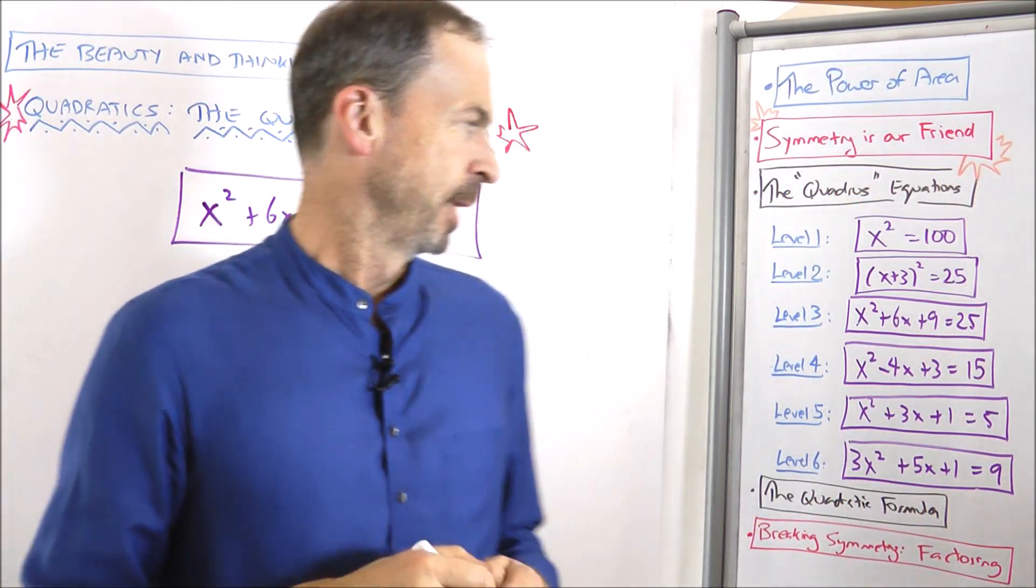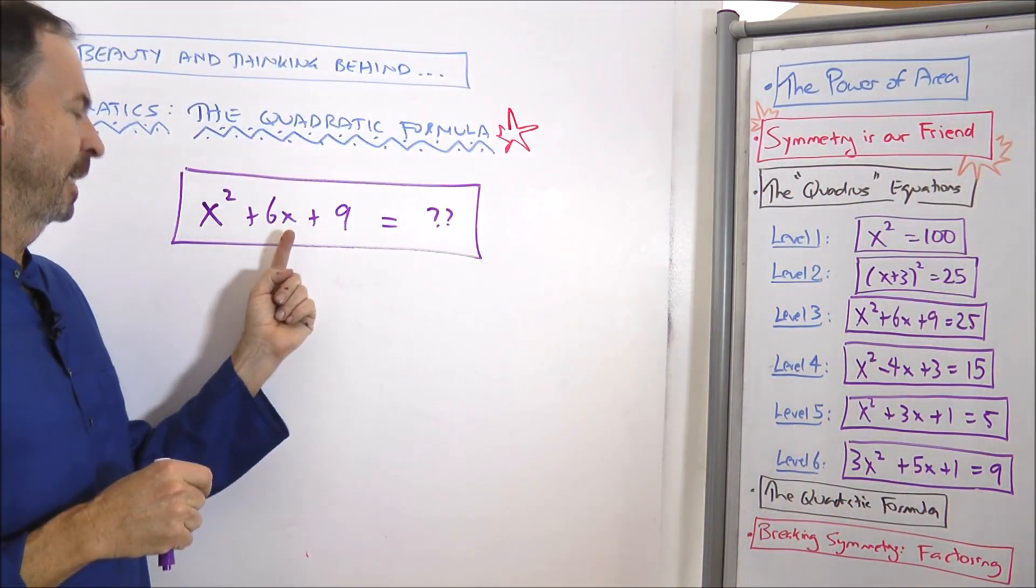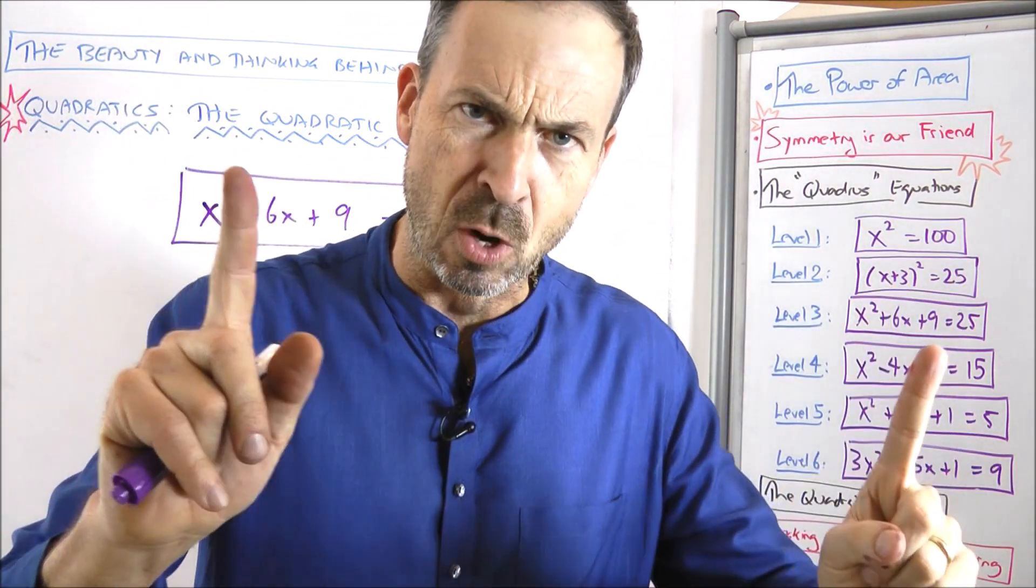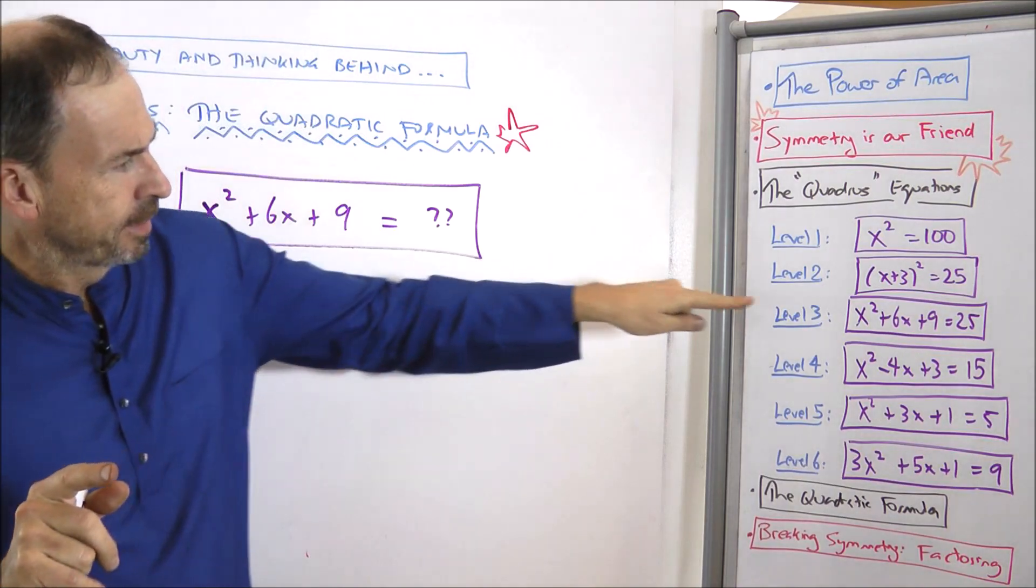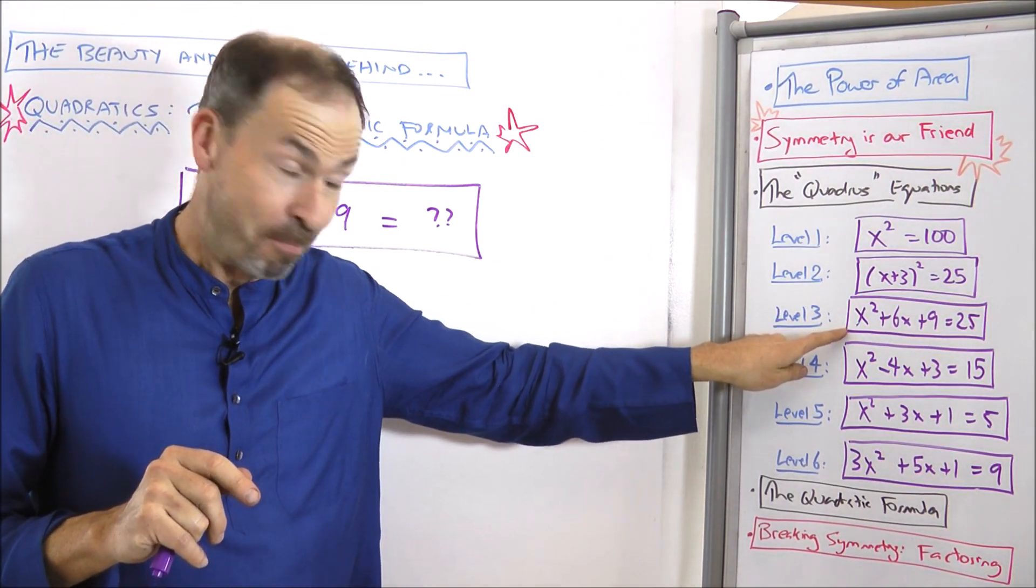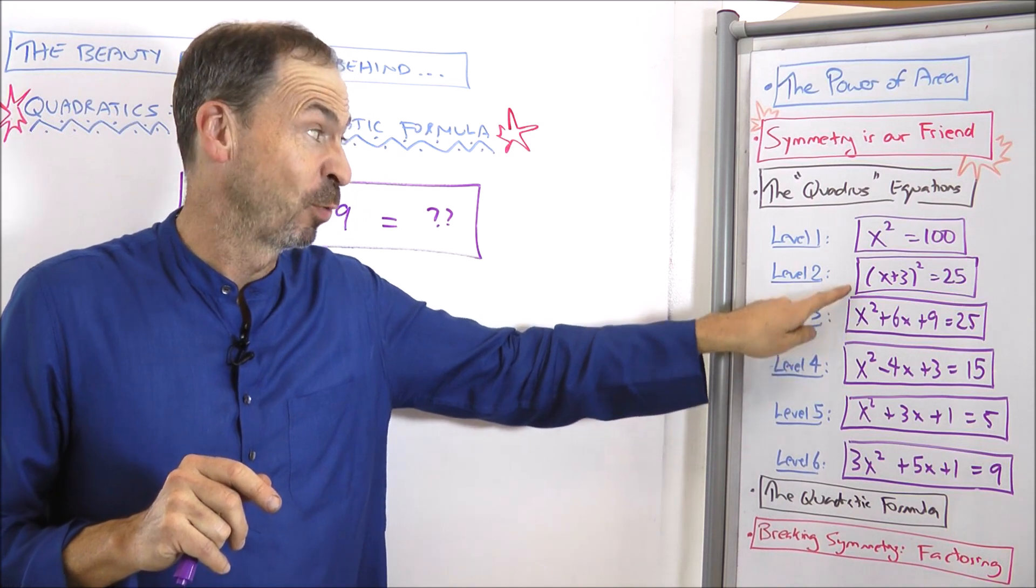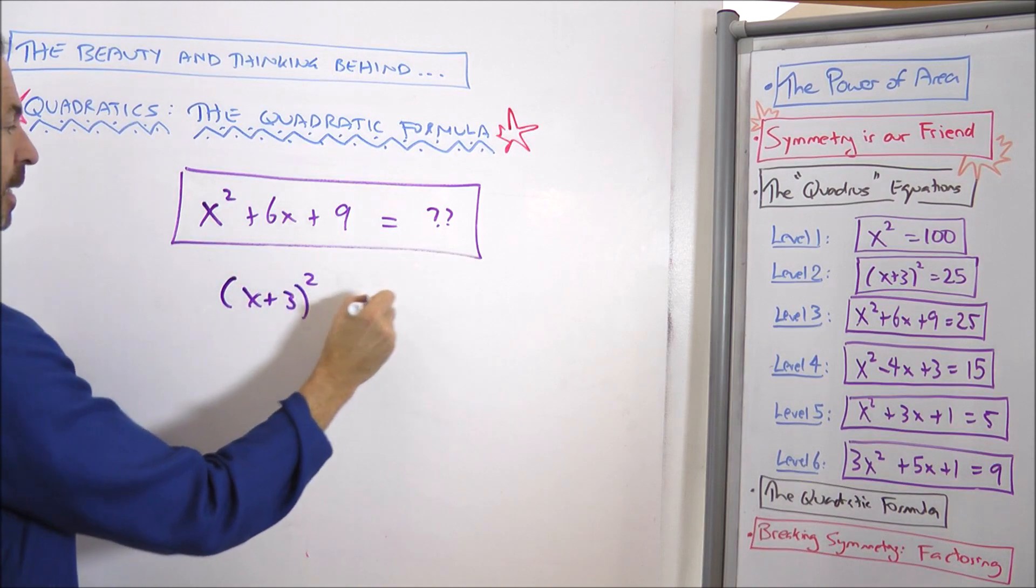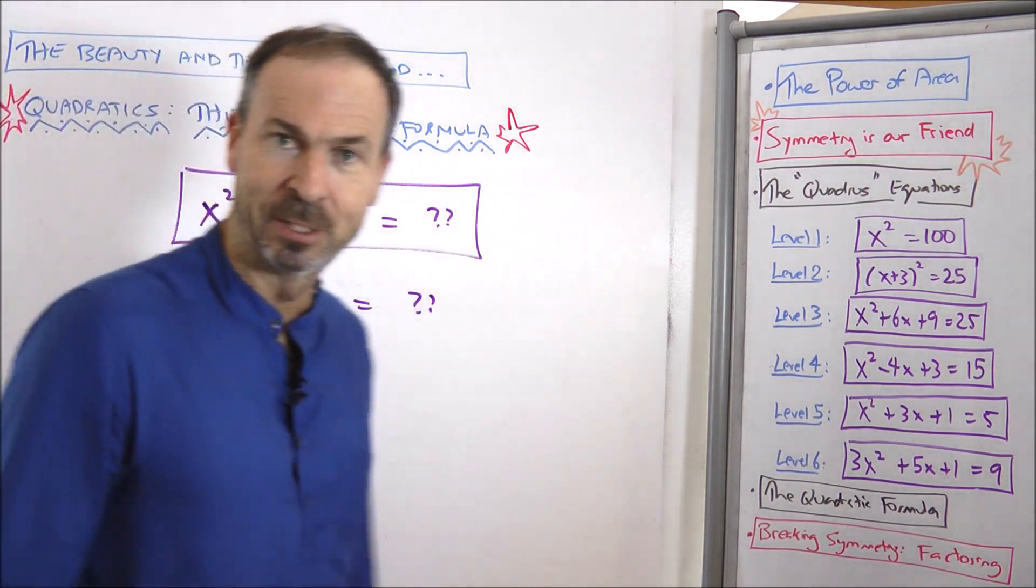Okay, here's something a little curious. Let's look at x squared plus 6x plus 9 equals something. I'll hold off what something is for the moment, but it's actually this level 3 question we did in the first video that we recognized as a level 2 in disguise. This is really x plus 3 squared equals whatever number that's going to be.